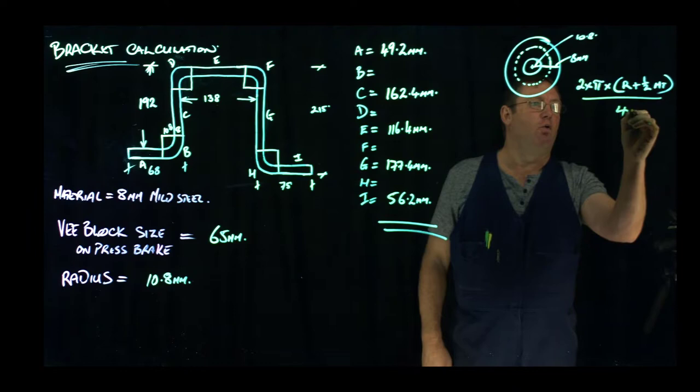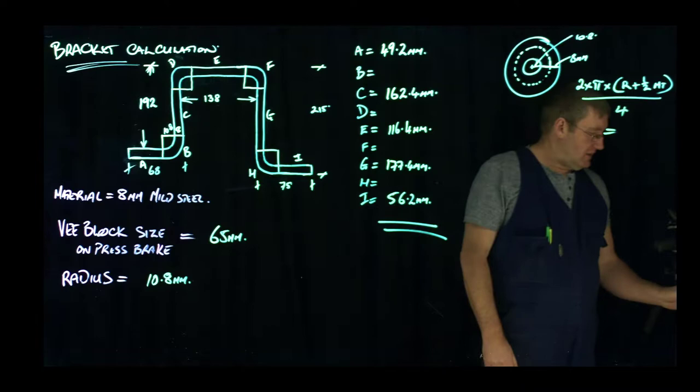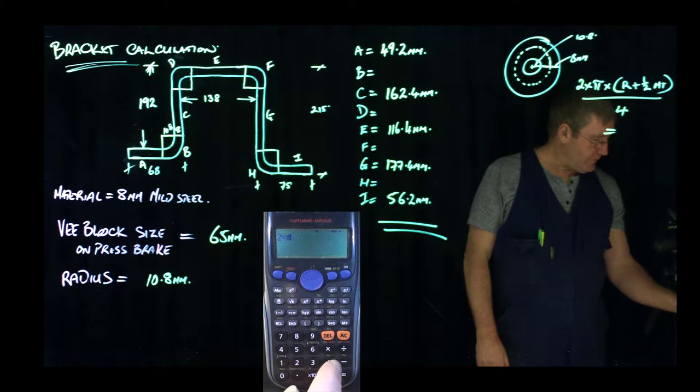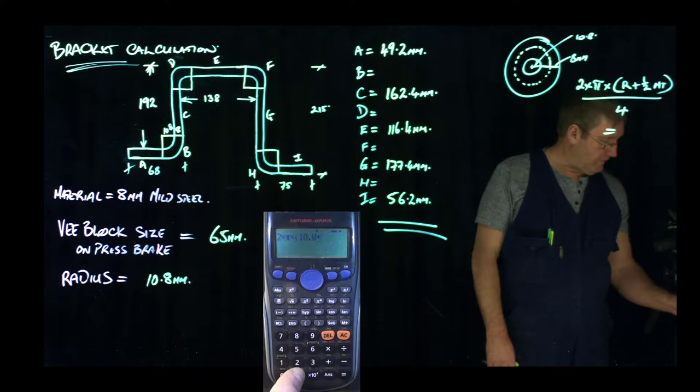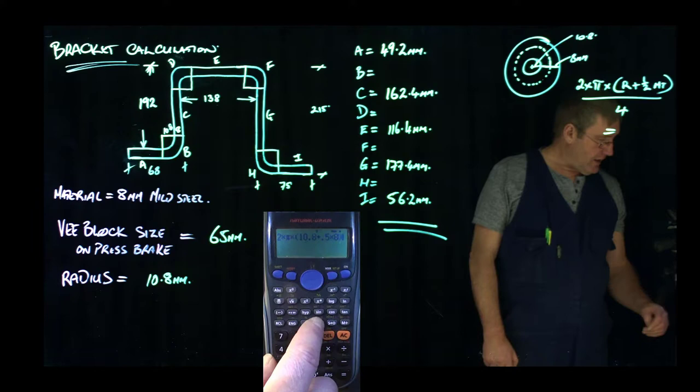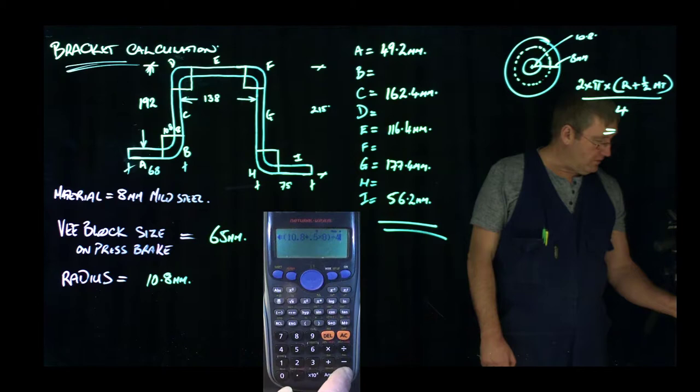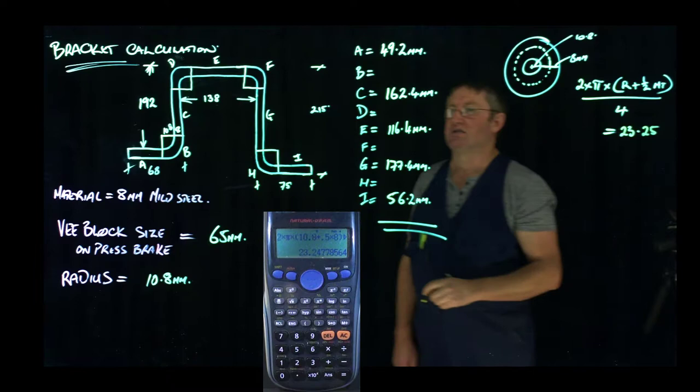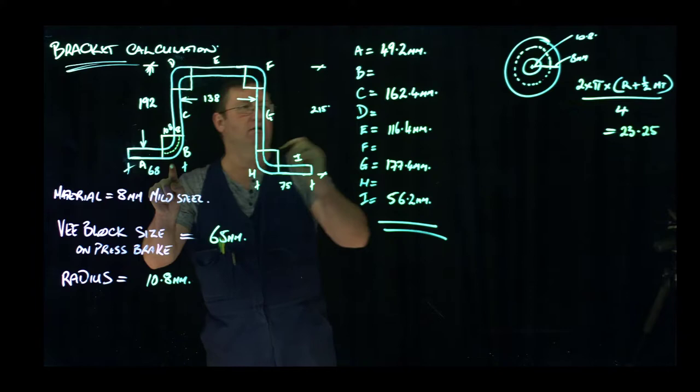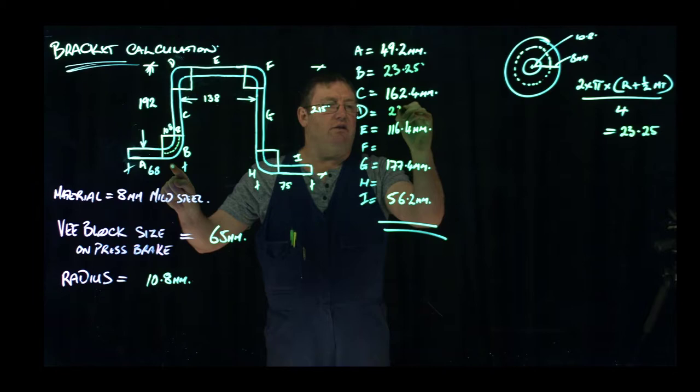So enter the calculator. Two times pi times bracket. Radius is 10.8 plus half the material thickness. Well, I'll do 0.5 times 8mm thickness, close bracket. And then divide by four. Gives us a length per corner of 23.25. I'm going to go to two decimal places. So B, the length around this portion here, is 23.25. D is 23.25, F is 23.25, and H is 23.25.